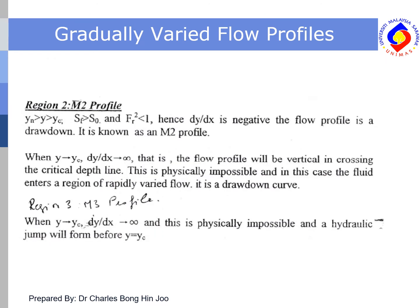For Region 2, the M2 profile: the normal depth is higher than the flow depth and the flow depth is higher than the critical depth. The energy line slope is larger than the channel bottom slope and the Froude number squared is less than 1; hence dy/dx is negative. The flow profile is a drawdown curve. When y approaches the critical depth, dy/dx approaches infinity, making the profile vertical at the critical depth line, which is physically impossible. In this case, the fluid enters a region of rapidly varied flow.